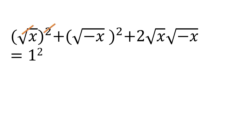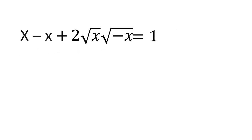Now the square and root can be cancelled out. We have x minus x plus 2 square root of x times square root of negative x equal to 1.